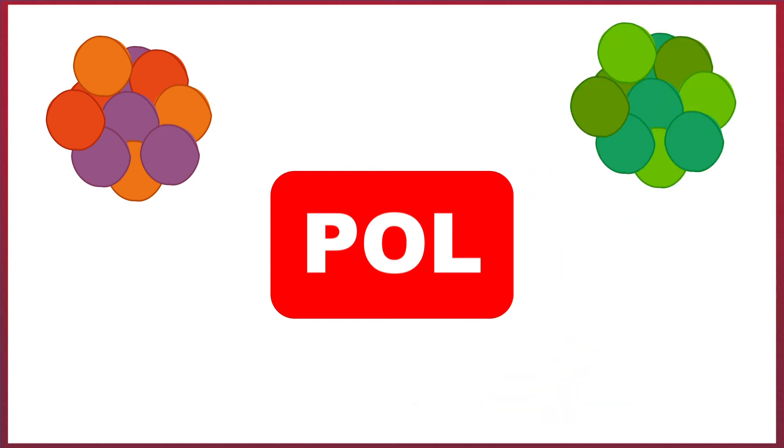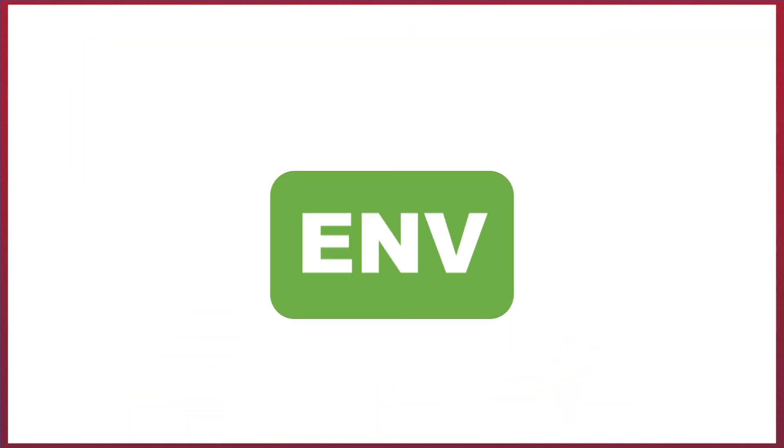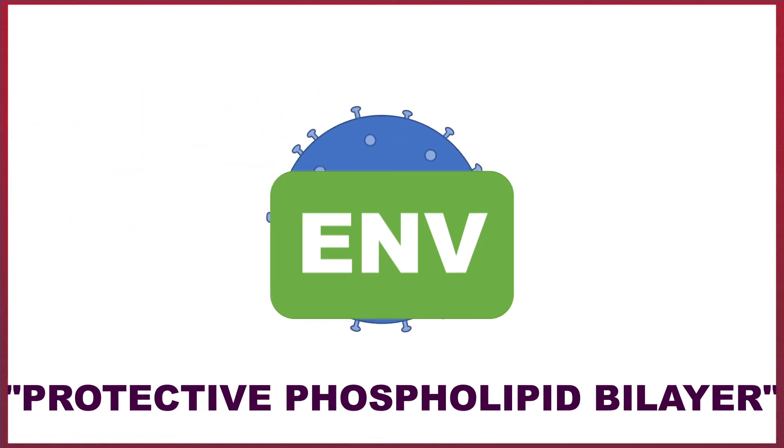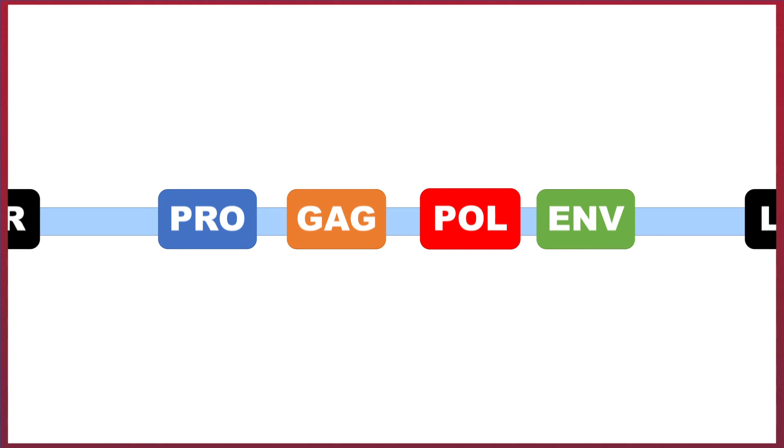The pole region which encodes for the reverse transcriptase, integrase, and protease enzymes. And the ENV region which encodes for the protective lipid which surrounds the virus. Surrounding these genes are two sets of long terminal repeats. These mediate the integration of the retroviral DNA into the host genome.